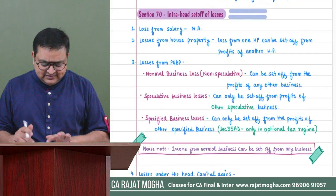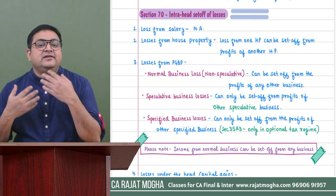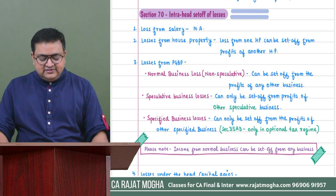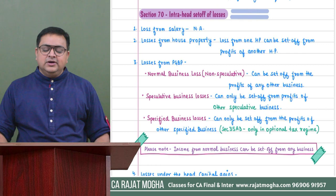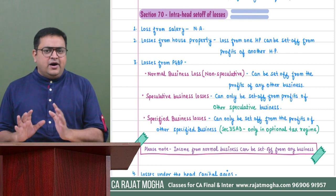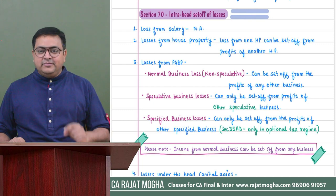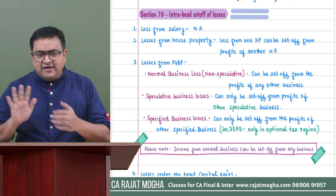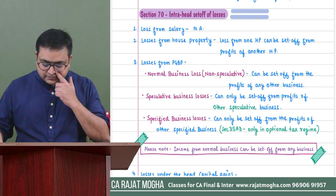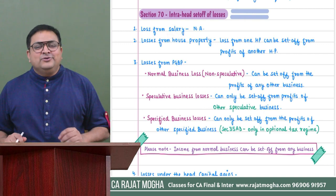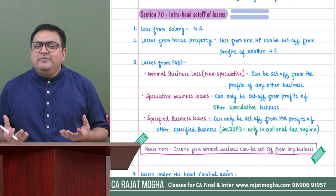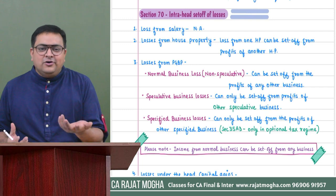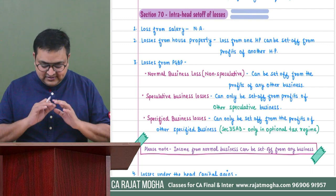First we will discuss intra-head set-off under section 70, though section numbers are not so important here — the provisions are what matter. We have five heads of income. First is salary. Can there be losses in salary? The answer is no. There cannot be any loss in salary, so set-off of salary losses is simply not applicable.